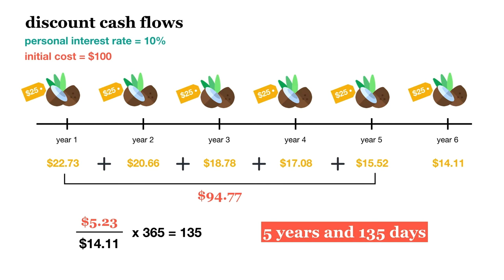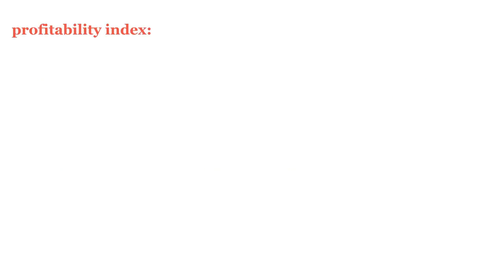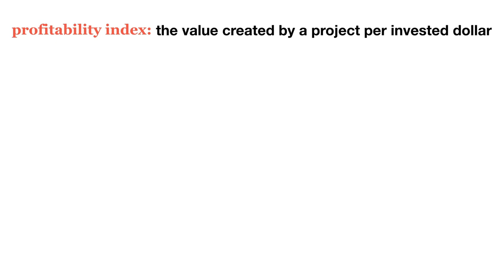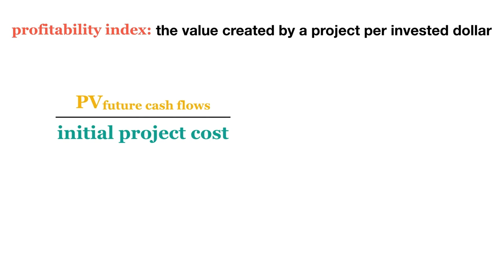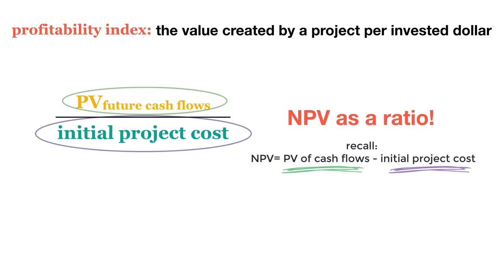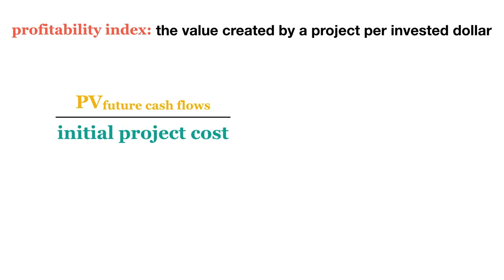Next, let's talk about the profitability index. A project's profitability index tells us the value created by a project, expressed in today's dollars, per dollar we invest today. To calculate it, we take the present value of our future cash flows divided by the initial project cost. We can think of this as expressing our NPV in relative or ratio form rather than in absolute dollar terms — giving us a ratio that tells us how efficiently our money is being put to use. How much can we earn per dollar we spend?